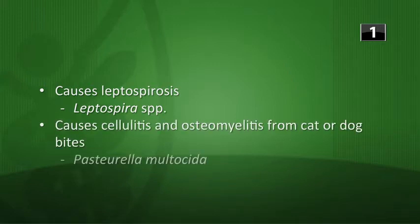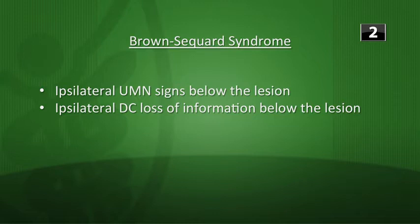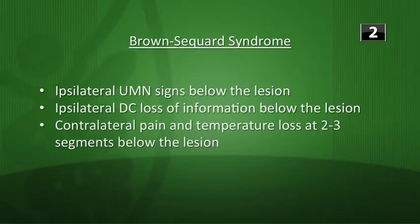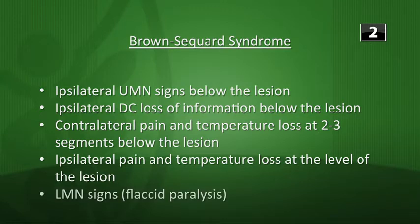Next, what are the findings of Brown-Séquard syndrome? You're going to have ipsilateral upper motor neuron signs below the lesion, ipsilateral dorsal column loss of information below the lesion, and contralateral pain and temperature loss at about two to three segments below the lesion. Also, ipsilateral pain and temperature loss at the level of the lesion, lower motor neuron signs, and flaccid paralysis.